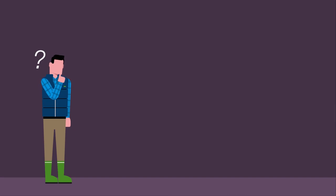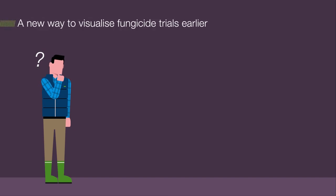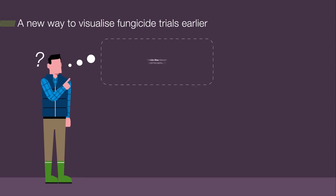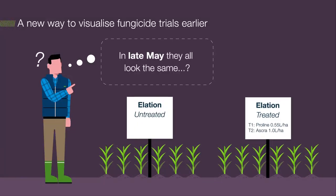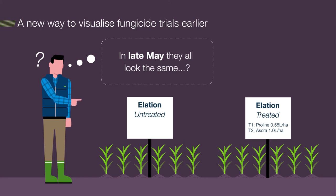This work included developing new ways to bring fungicide trial results to you earlier in the season. Currently, when we look at trials in late May, they often look very similar due to the long latent period of septoria. Therefore, we usually have to wait until late June or early July before clear visual differences in disease between fungicide treatments become apparent. However, Bayer's rapid disease detection technology has opened up the possibility to visualise fungicide trials earlier in the season.